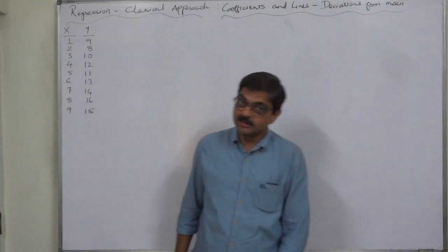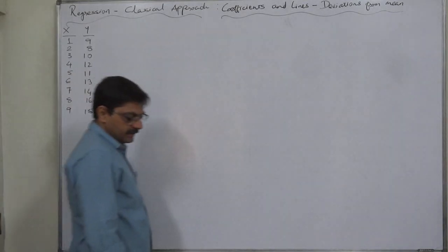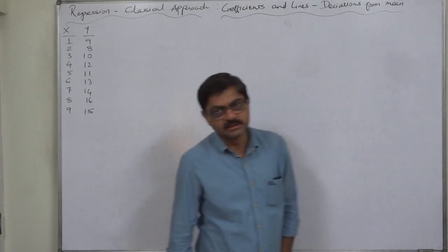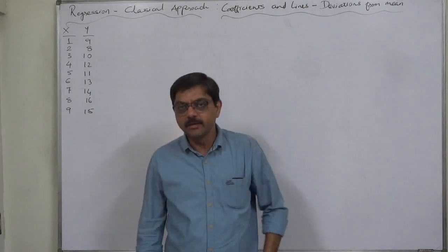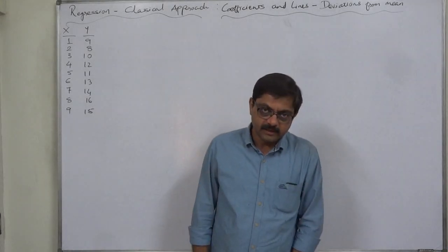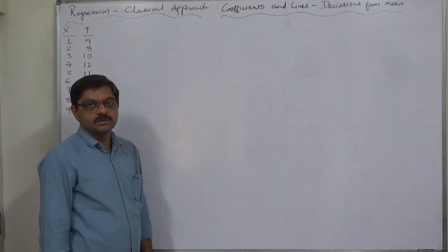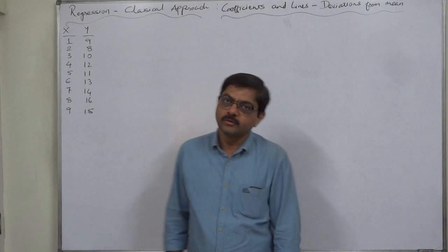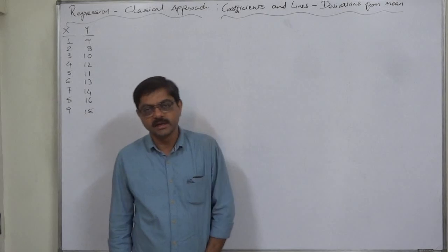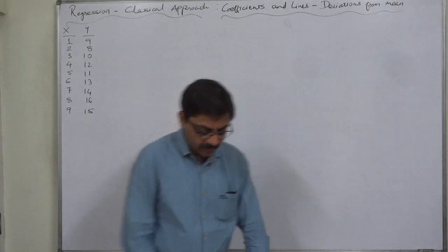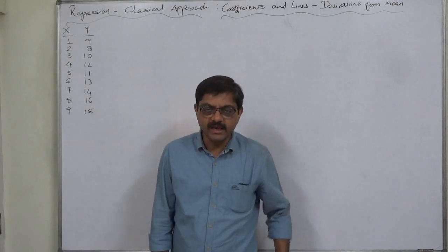Hello and welcome. In this regression classical approach, we are going to solve a case with the help of deviations taken from the arithmetic mean. We will calculate the coefficients of regression through a formula in which we substitute the summations of deviations taken from their arithmetic mean. For this purpose, it is necessary to have the arithmetic means as integer values.